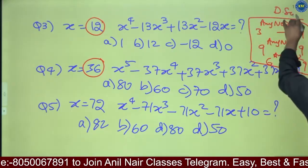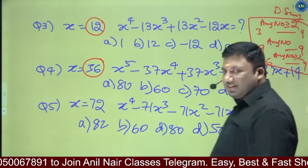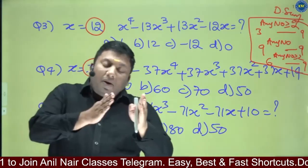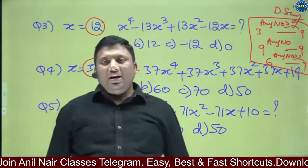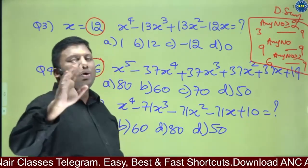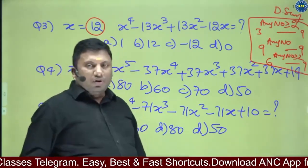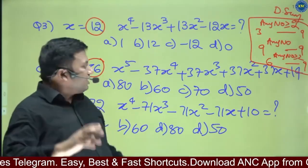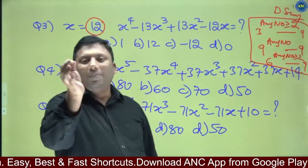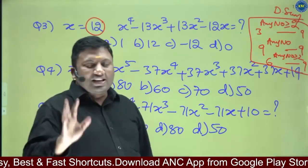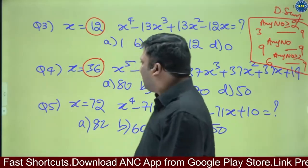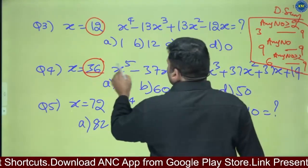For example: 3 squared is 9, 3 cubed is 27 (digital sum 9), 3 power 4 is 81 (digital sum 9). So 3 power any natural number greater than or equivalent to 2 — digital sum is 9. 6 squared is 36 — digital sum is 9. All these are divisible by 9.